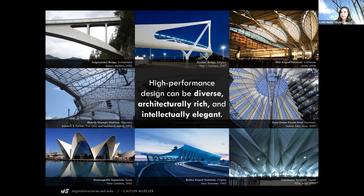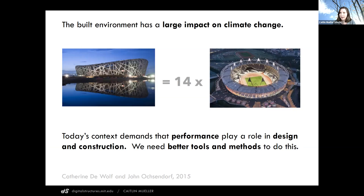It's really important that we think about this today because buildings and architecture have a huge impact on climate change. There's operational energy and emissions that cause climate change, but also the energy and carbon emissions associated with building materials themselves. In this example, the London Olympic Stadium on the right uses only one fourteenth the embodied carbon per seat compared to the Beijing Olympic Stadium on the left, and that's due to design decisions made by the design team.